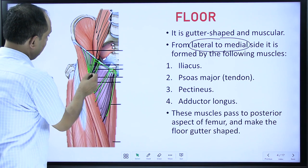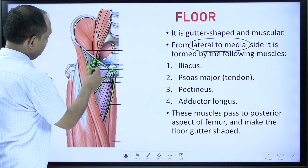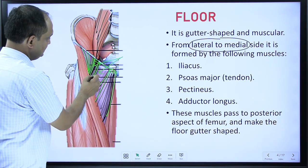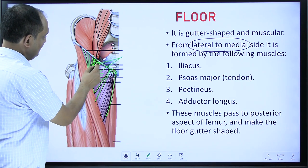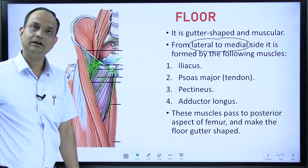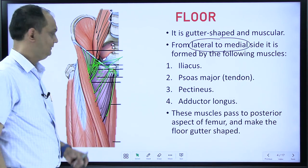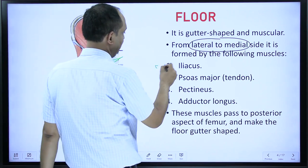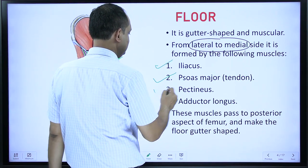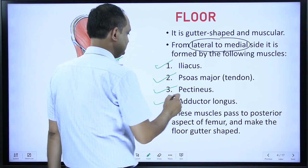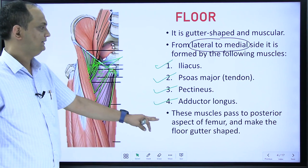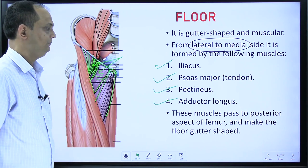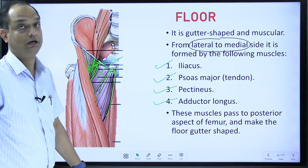Both P-muscles — pectineus and psoas — are near each other, but pectineus is on the medial side and psoas major is on the lateral side. So from lateral to medial the series is: iliacus, psoas major, pectineus, and adductor longus. These muscles pass to the posterior aspect of the femur and make the floor gutter-shaped.